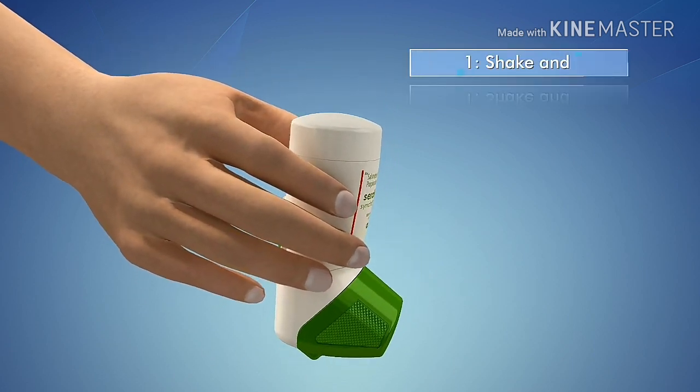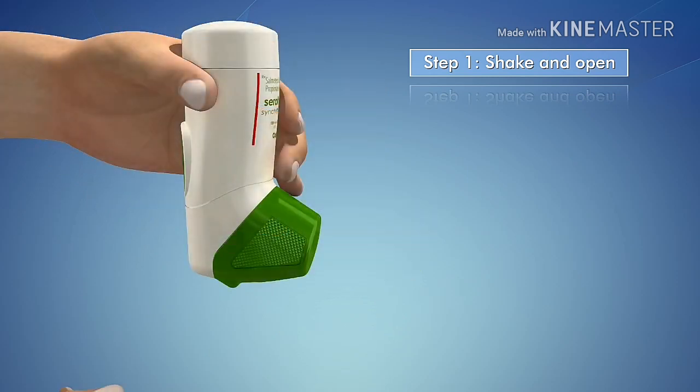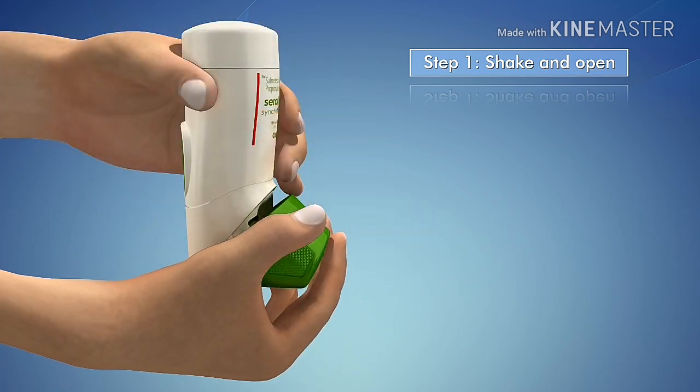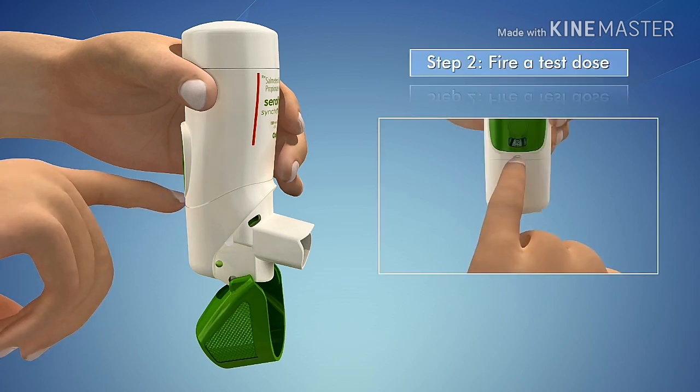Step 1. Shake the inhaler well and open the inhaler by folding down the mouthpiece cap. Step 2. Push down the dose-release button located at the back of the inhaler.